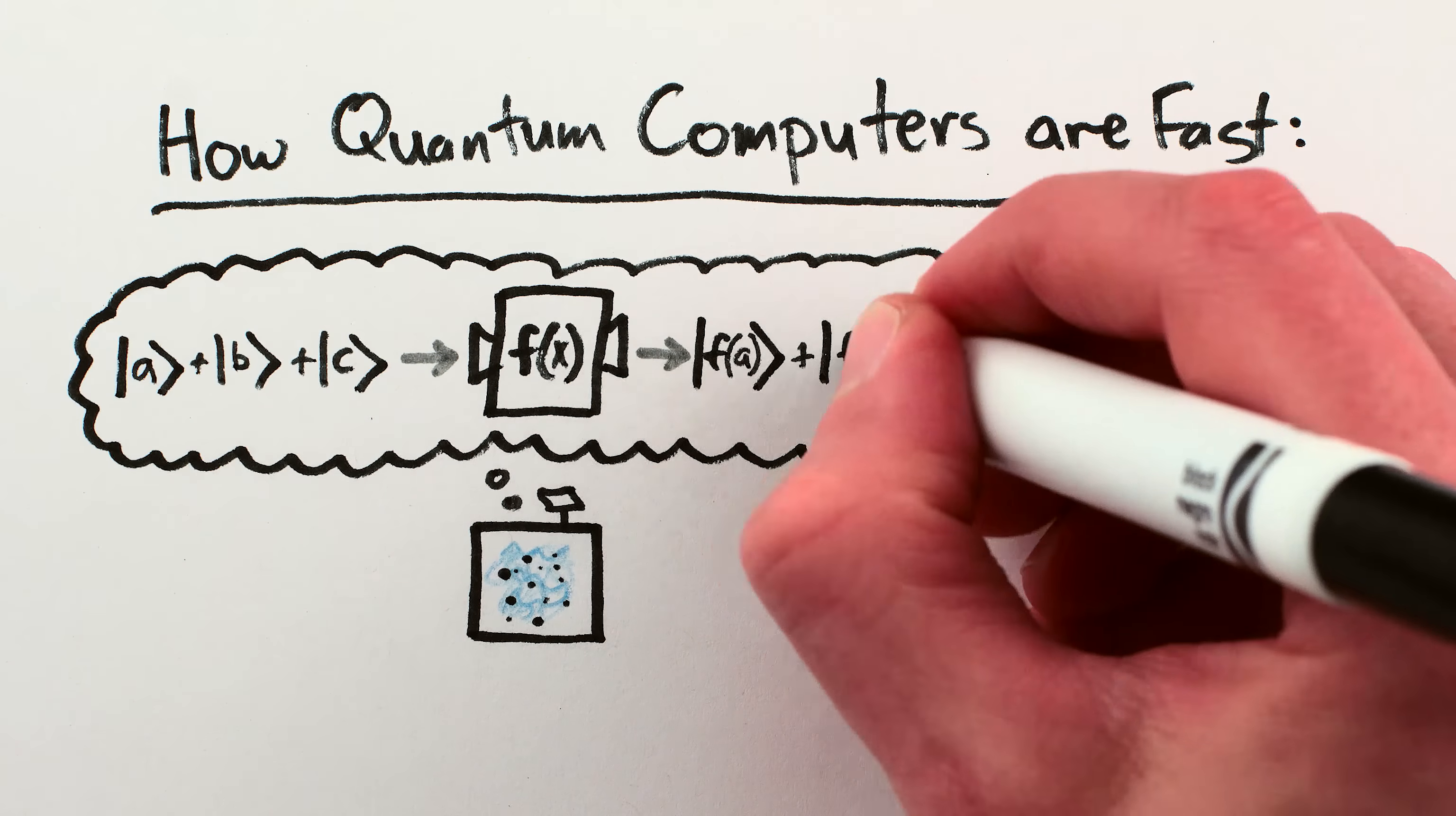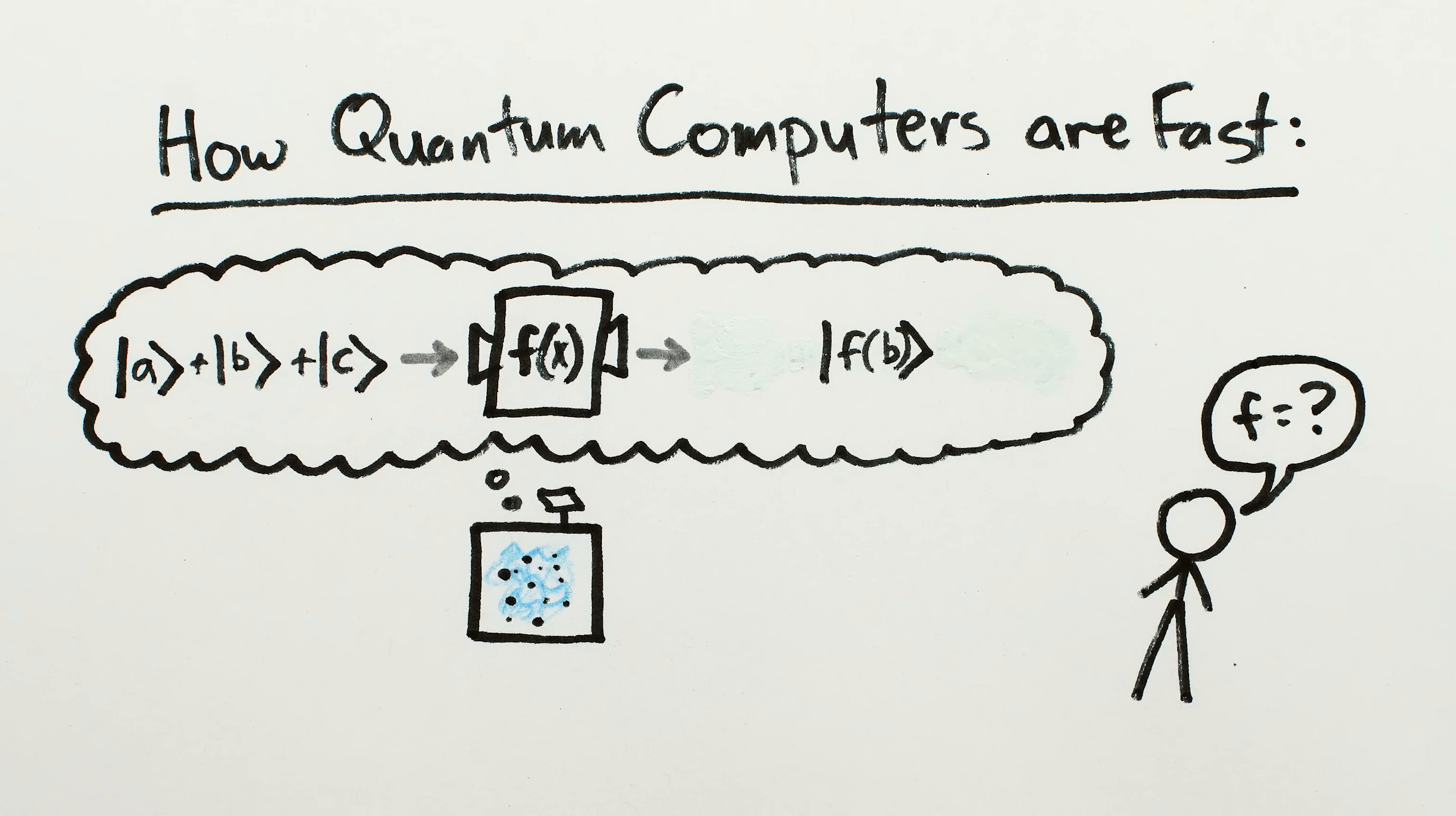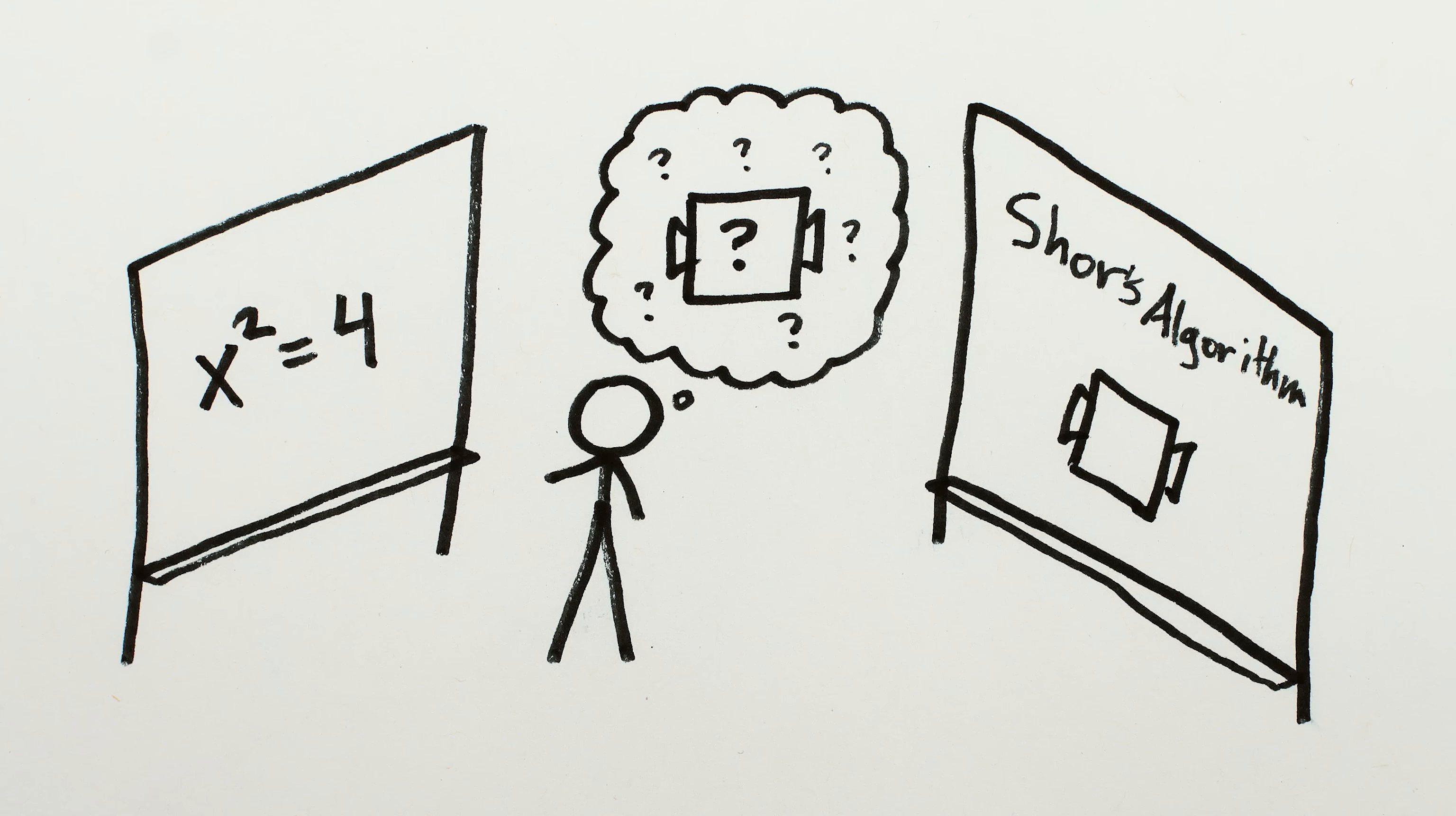The key behind fast and reliable quantum computations is to set up a quantum superposition that calculates all possible answers at once, while being cleverly arranged so that all of the wrong answers destructively interfere with each other. That way, when you actually measure the output of the calculation, the result of your measurement is most likely the right answer. In general, it can be really hard to figure out how to put any particular problem into a quantum form where all the wrong answers destructively interfere, but that's precisely what Shor's algorithm does for the problem of factoring large numbers.